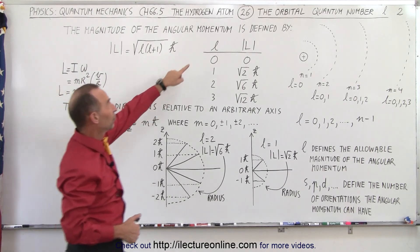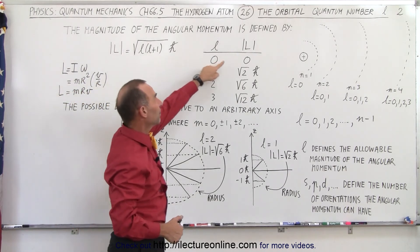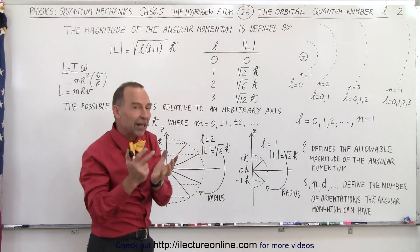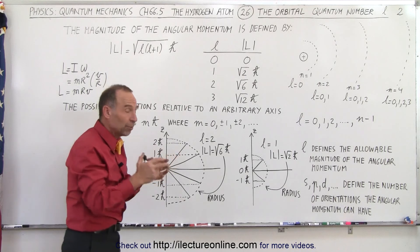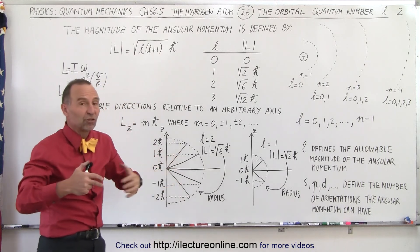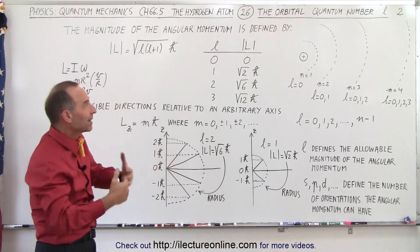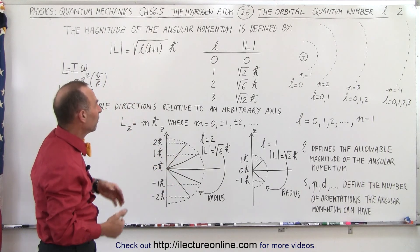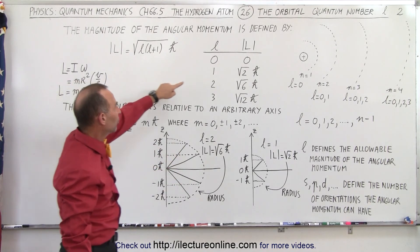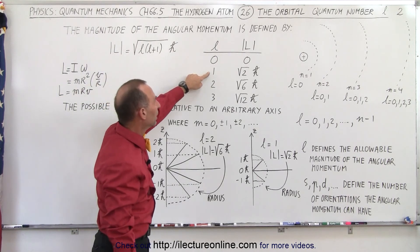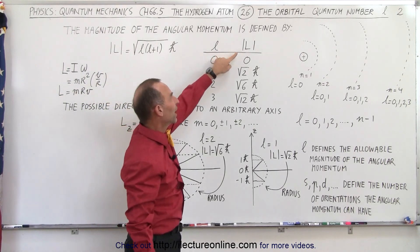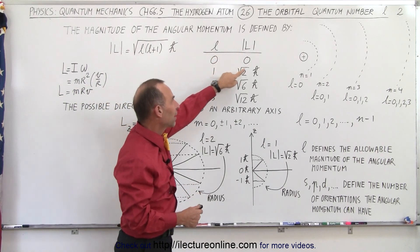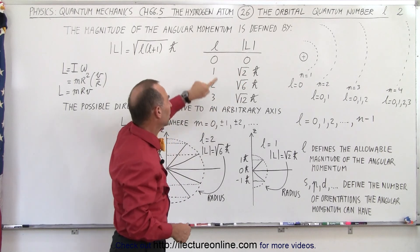When L equals 0, the possible value for the angular momentum is 0 — there's no defined angular momentum when L equals 0. But when L equals 1, the magnitude of the angular momentum is going to be the square root of 2 times H-bar.